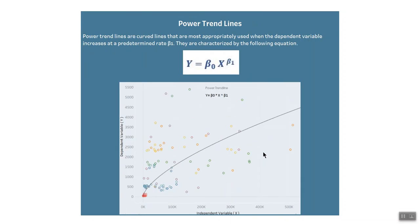The fourth option in Tableau is power trendlines. Note that power trendlines are a feature made available in Tableau 10.5 onwards and are not supported by earlier versions. Power trendlines are curved lines most appropriate when the dependent variable increases at a predetermined rate. In the power model, both variables are transformed by a natural log before the model is estimated. Since these quantities are not defined for negative values, any marks with negative values in either variable will be filtered out. Power trendlines should be used with caution to avoid information loss. An example use case is the acceleration of a plane — the distance covered in kilometers as seconds go by increases at a predetermined rate.